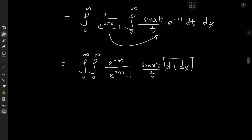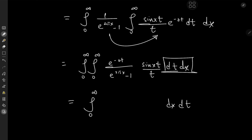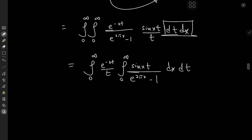We can switch the order of integration, yielding the double integral from 0 to infinity, now first with respect to x and then with respect to t. This is useful because we can take terms outside the x-integration operator: e^(−zt)/t times the integral from 0 to infinity of sin(xt) / (e^(2πx) − 1) dx.